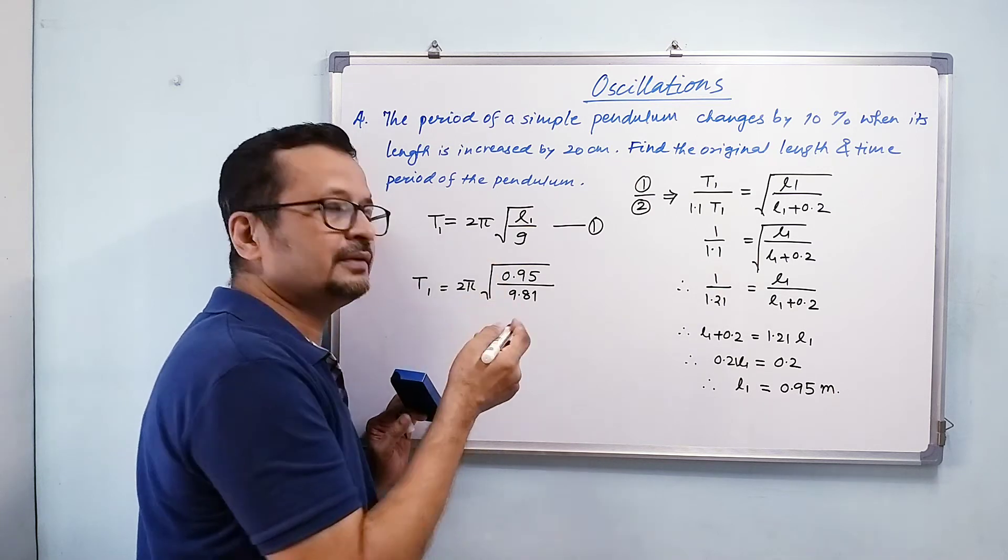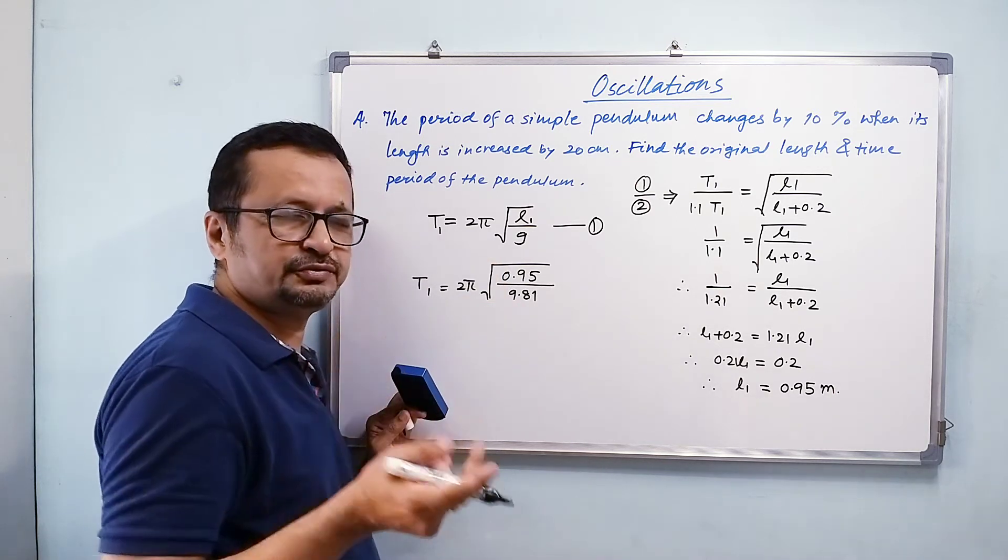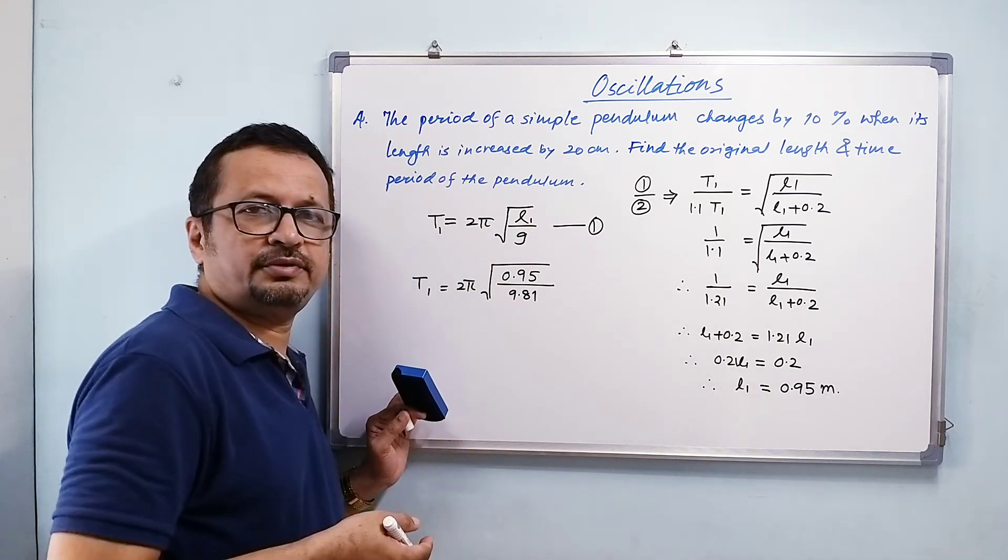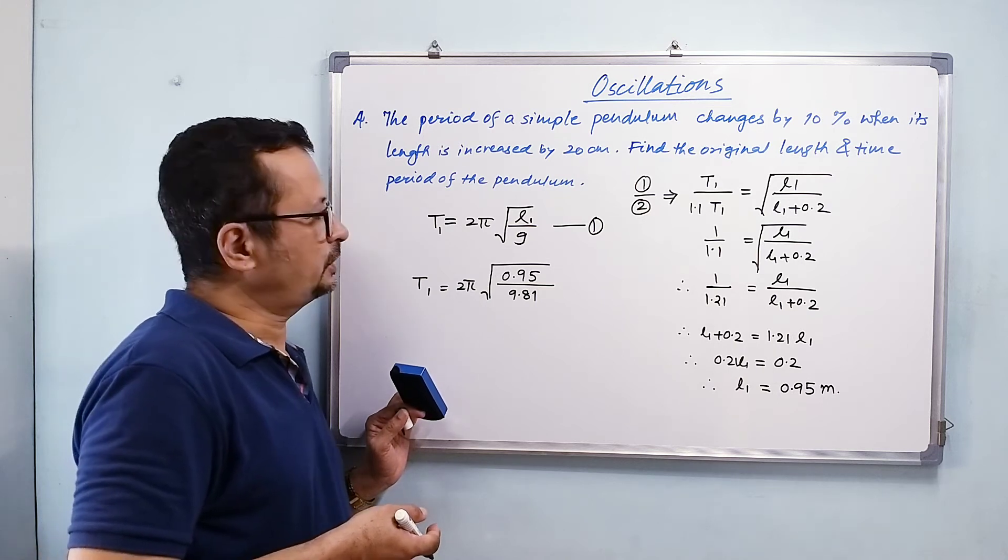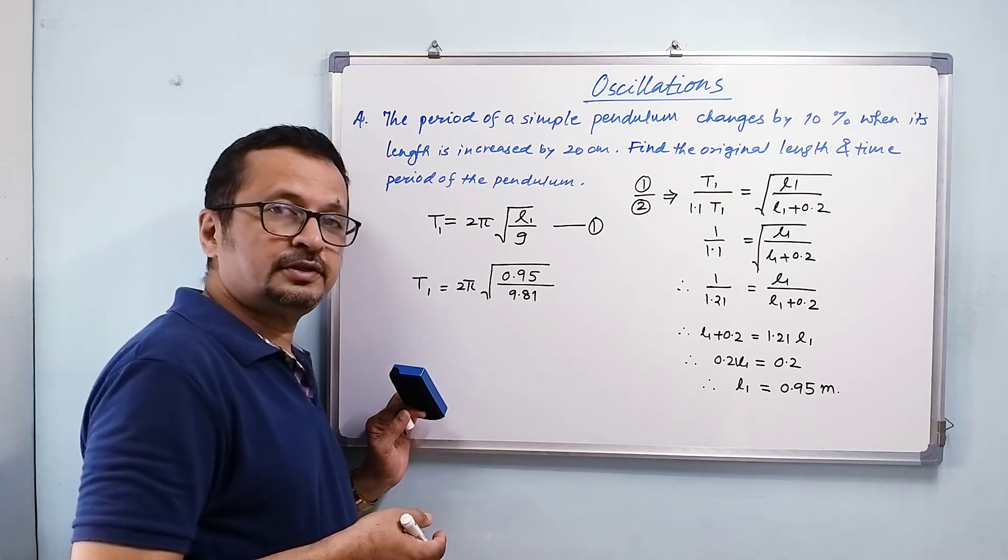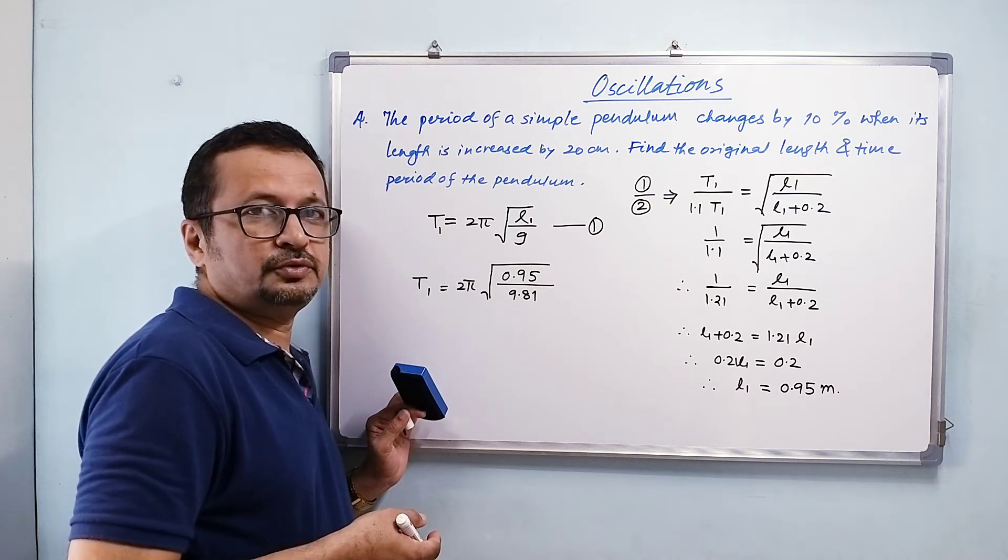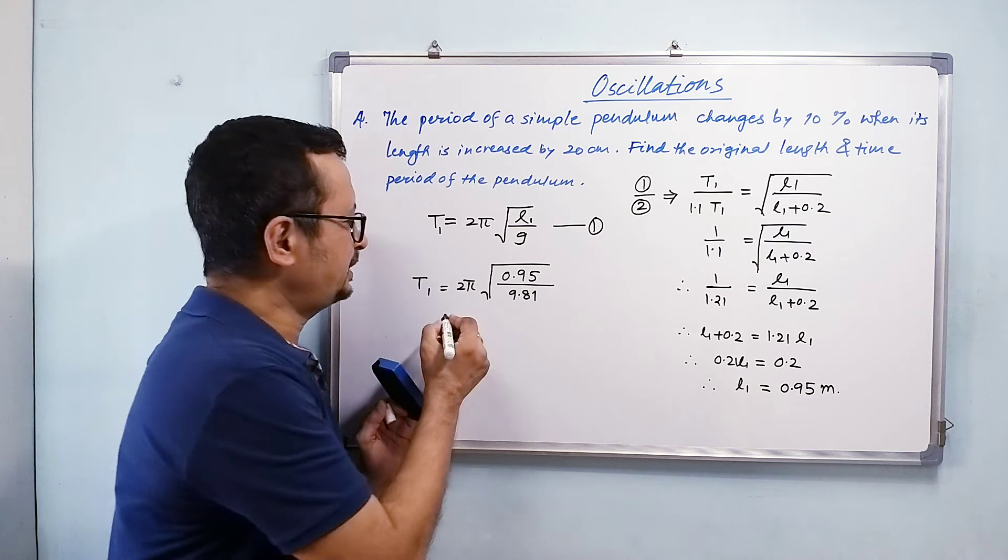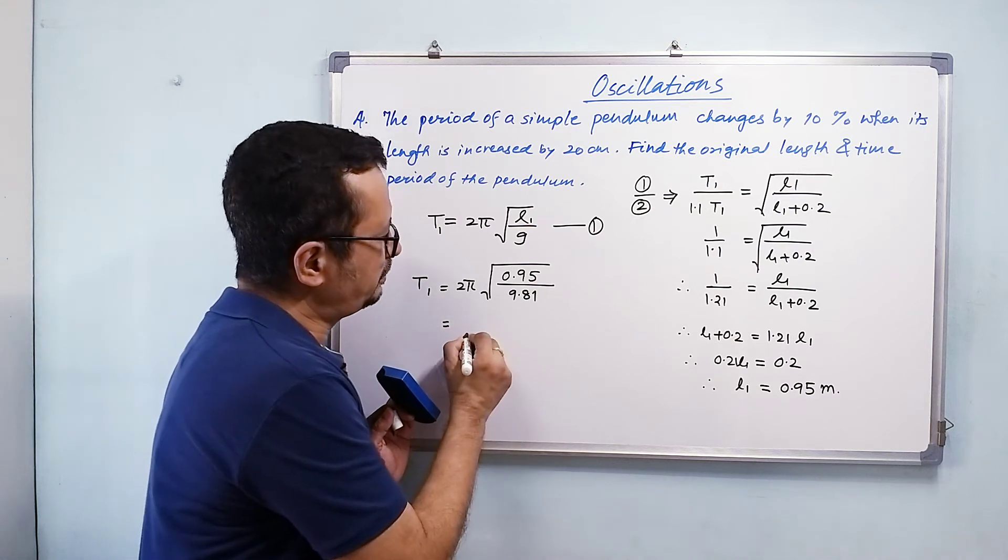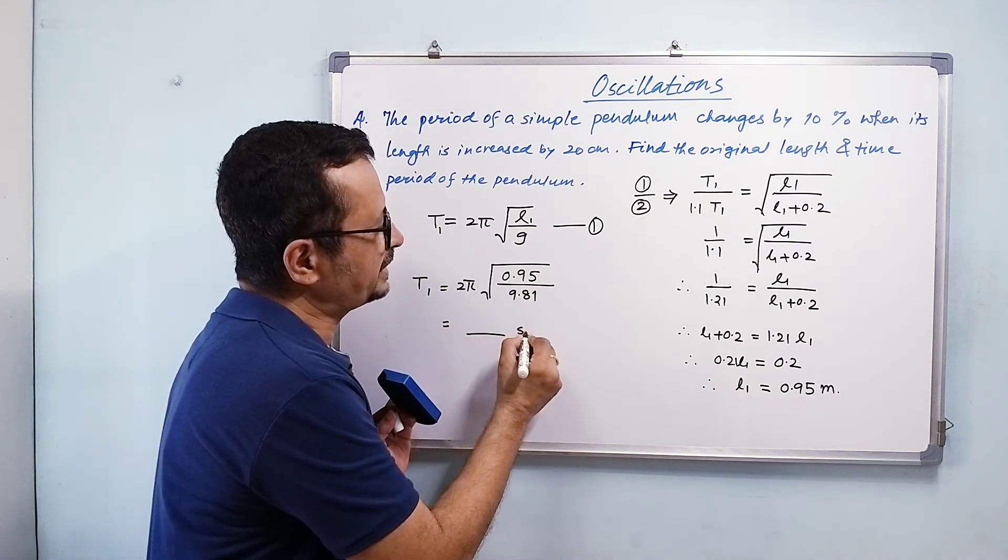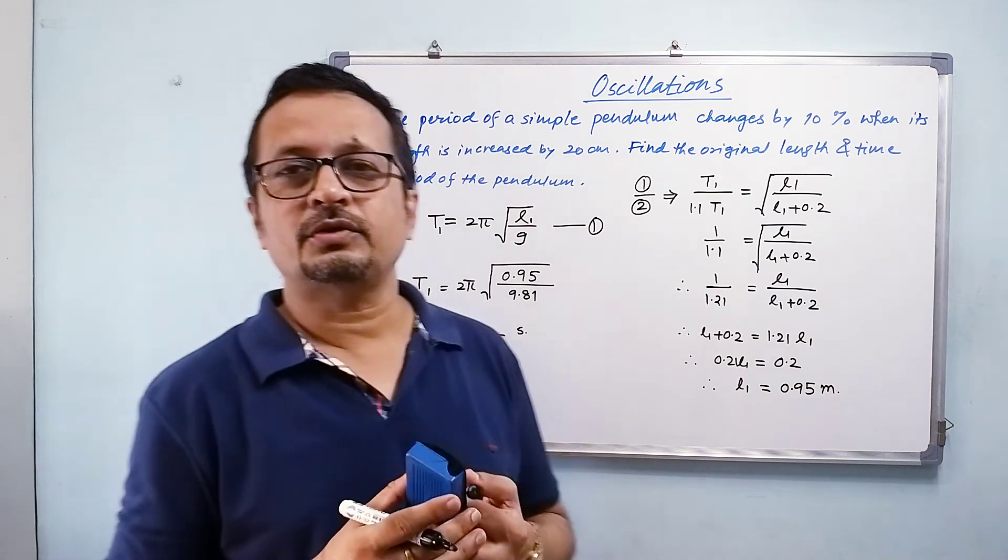...take square root of that and multiply that by 2π. You can substitute value for π as 3.1415 or 3.142. You can use calculator or any other means allowed in the examination and get the time period of this pendulum as so many seconds.